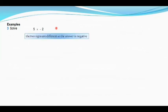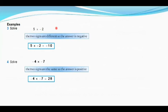Pause the video and solve this. One positive and two different signs — yes, the answer is going to be minus 7. Pat yourself for getting the correct answer! For the next question: the signs are the same, so the answer has to be positive. Minus 4 times minus 7 is positive 28. Excellent — keep going and keep practicing!